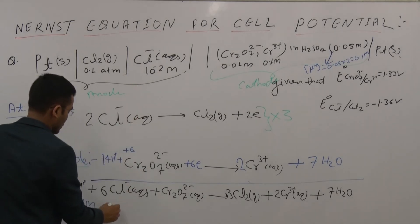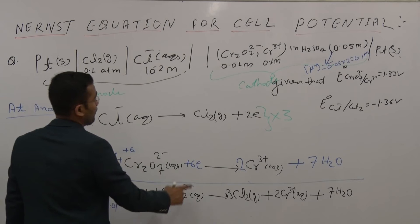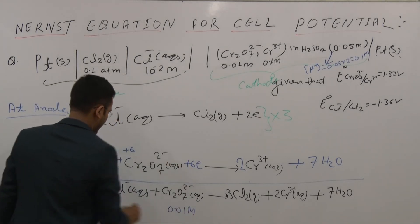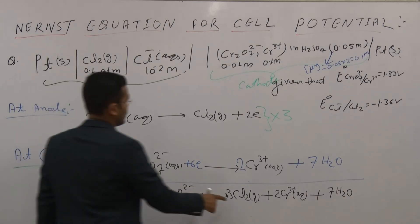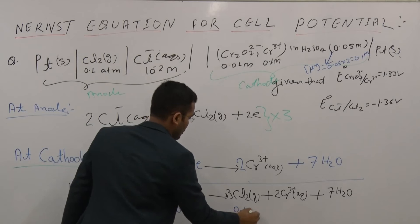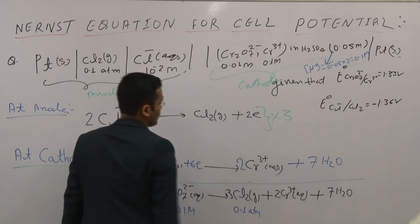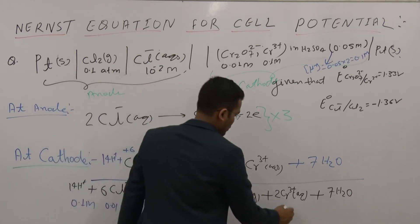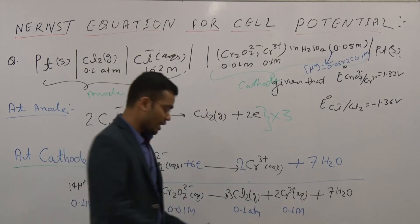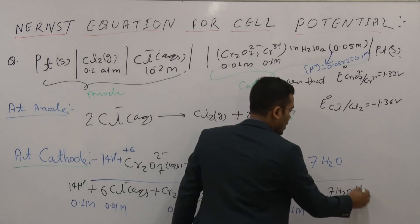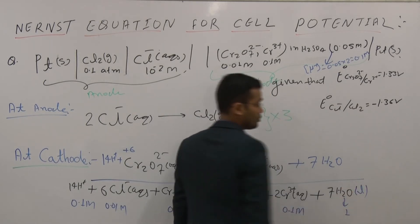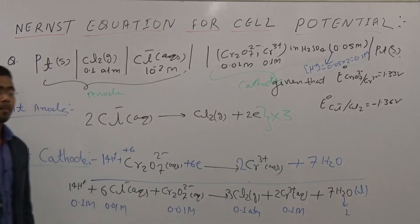The concentration of Cr₂O₇²⁻ is 0.1 M. Since Cl₂ is a gas, its pressure is 0.1 atm. The concentration of Cr³⁺ (aqueous) is 0.1 M. Water is in pure liquid form, so its activity is taken as 1.